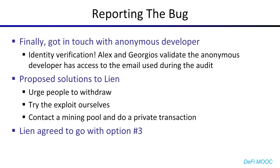Once we confirmed we were speaking to the legitimate people, we proposed our solutions. We said: you can either urge people to withdraw, but that's a bad idea because it tips off hackers. You can try to exploit it ourselves, but if we do that there's a very high chance we're going to get front-run — people have been front-run for less. But we have a third option: we can try contacting a mining pool and doing a private transaction, which will shield us from a majority of the front-runners. Fortunately, Lean agreed to go with option number three.